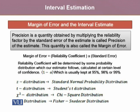Whereas the reliability coefficient will be determined by some probability distribution, which our estimator follows, calculated at certain level of confidence, which is 1 minus alpha. This level of confidence is usually kept at 95%, 98%, or 99%.